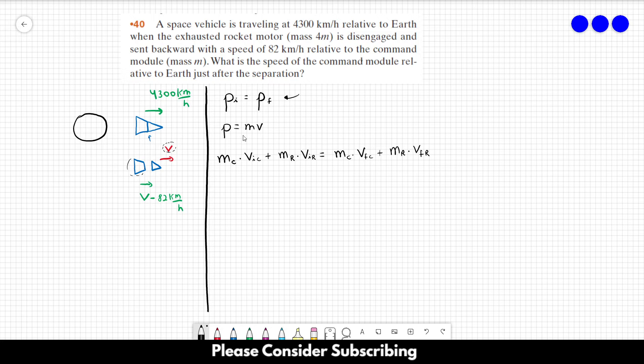So in our case, the mass of the command center is just m. Its initial speed is this value here, let's call it v₀. So m v₀ plus the mass of the rocket is 4m. The initial speed of the rocket is v₀ as well. The mass of the command center is m, and the final speed is just v.